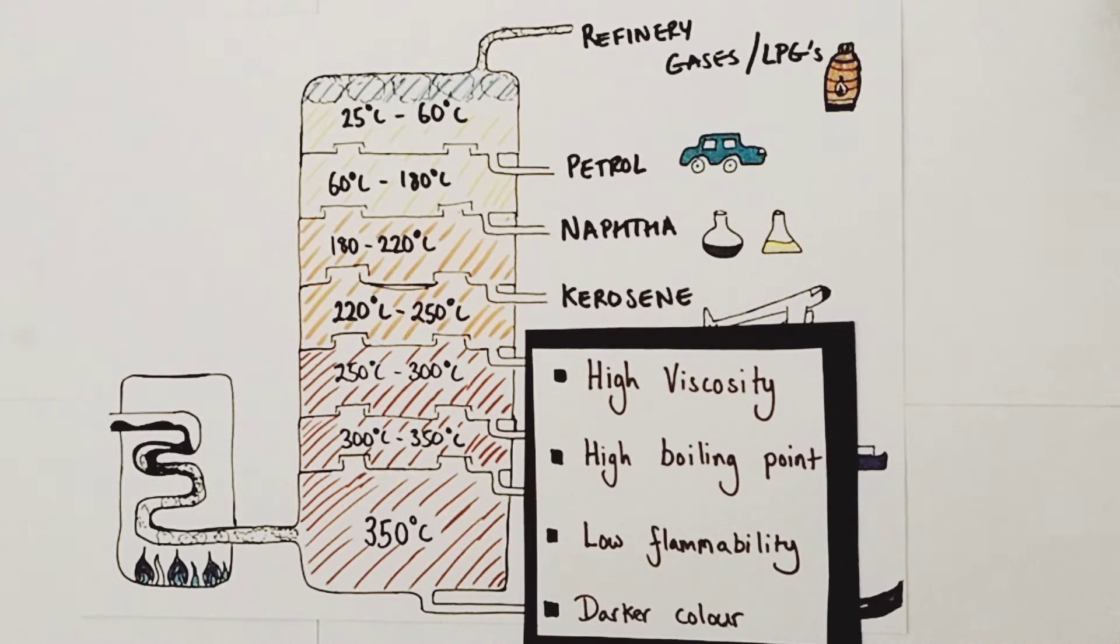Fractions collected at the bottom of the column at higher temperature will have similar physical characteristics including high viscosity - they'll be slow-flowing thick liquids - high boiling points, low flammability - they won't ignite easily - and they'll be darker in color, ranging from black to brown in shade.